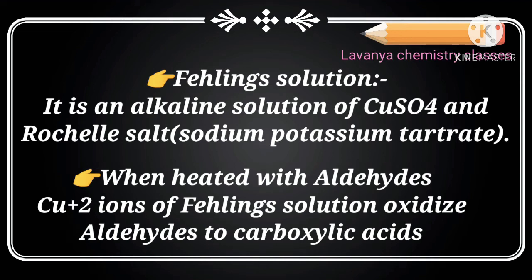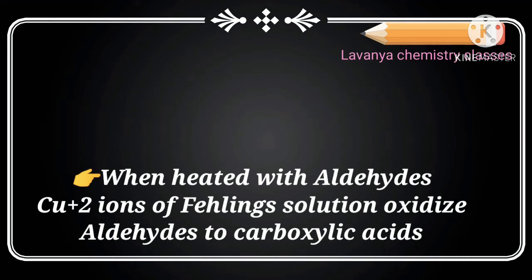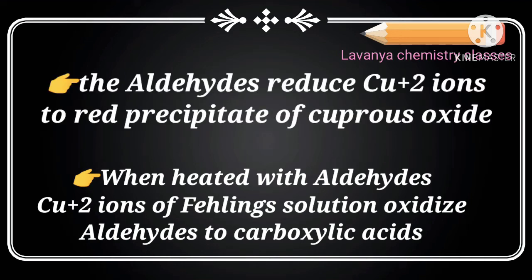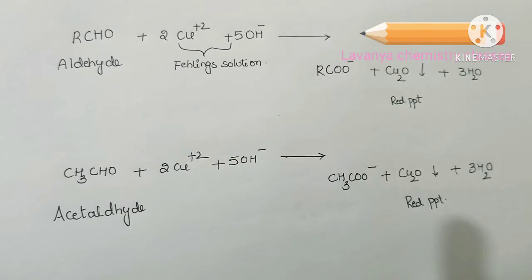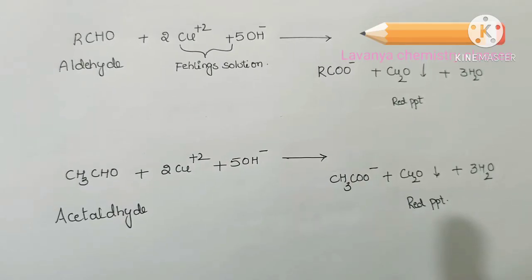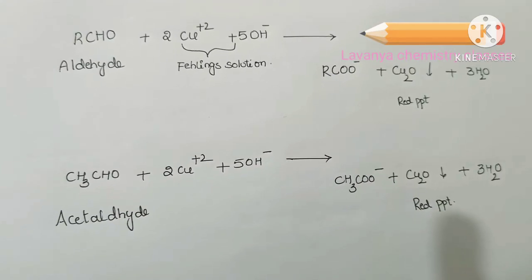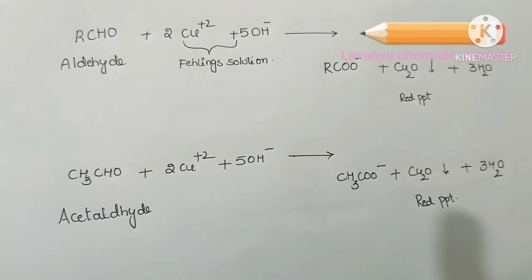The aldehydes reduce Cu²⁺ ions to a red precipitate of cuprous oxide (Cu₂O). When an aldehyde reacts with Fehling's solution, it reduces the Cu²⁺ to cuprous oxide, and a red precipitate is formed.